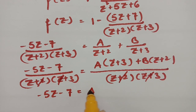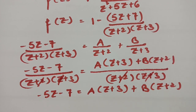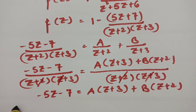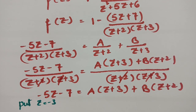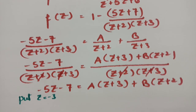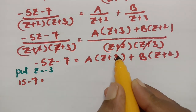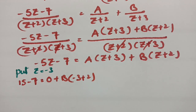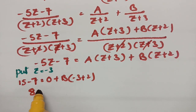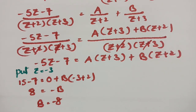Putting z = -3 into minus 5z - 7 = A(z + 3) + B(z + 2): we get 15 - 7 = 0 + B(-3 + 2), which gives 8 = B(-1), so B = -8.